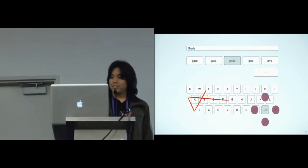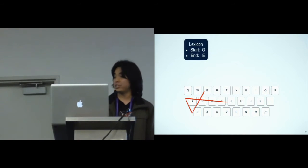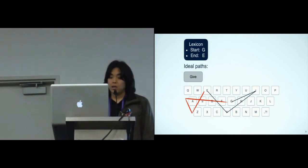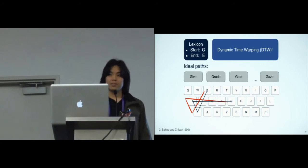So how does iSwipe determine the typed word? iSwipe has a dictionary from which we select only the words starting and ending with the letters indicated by the user, which in our case are G and E. For example, the word give. iSwipe then computes the word's ideal path, which is the trajectory connecting the center of the keys that form the word. And it does the same for all selected words. Each ideal path is then compared to the user's gaze path with dynamic time warping, or DTW, which is a technique for comparison of temporal sequences. The candidates are then sorted according to their DTW score and word probability from a language model, and the top five are displayed by the interface.